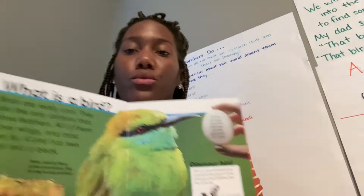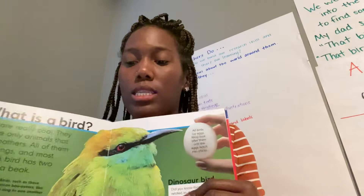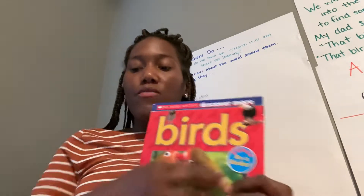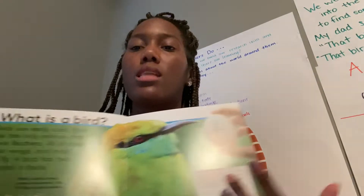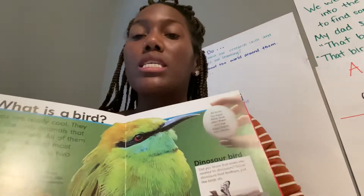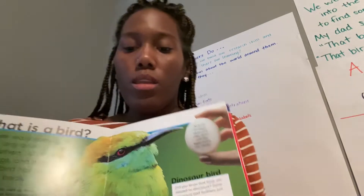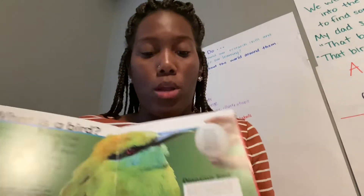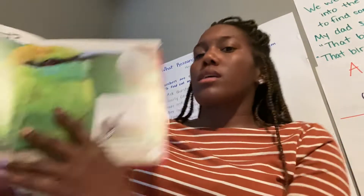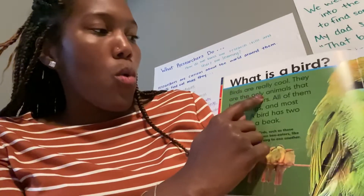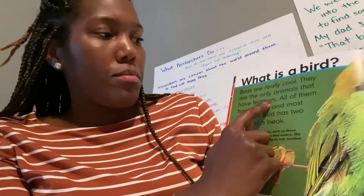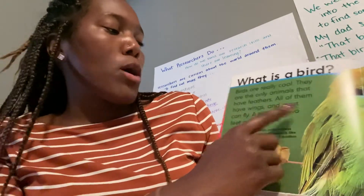Remember, an informational or non-fiction text has headings and those text features that we've talked about. Because informational text and non-fiction text are giving us information — things that we didn't know, things that we need to learn about. So this is our informational text on birds today. It says: what is a bird? Birds are really cool. They are the only animals that have feathers. All of them have wings and most can fly.